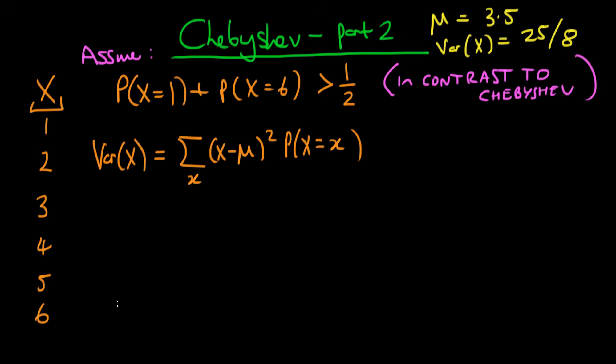Hi there, at the end of the last video we had arrived at the inequality which is shown above here. In contrast to that of Chebyshev, which told us that the probability that x equals 1 plus the probability that x equals 6 had to be less than or equal to a half.